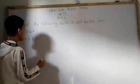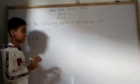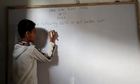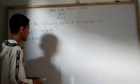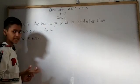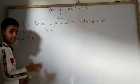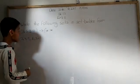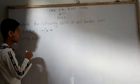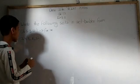In set builder form, we start the bracket with 'x : x' — meaning x such that x — to describe the elements of the set. Looking at the pattern in 3, 6, 9, 12, we can see these are all multiples of 3. So let n be any positive integer. If n equals 1, 2, 3, and 4, and we multiply 3 by n, we get this set.